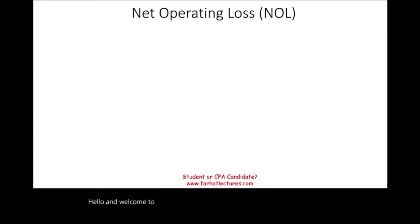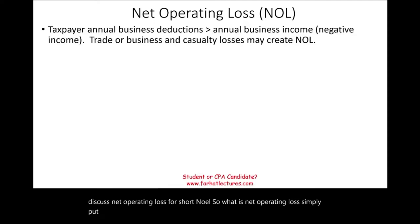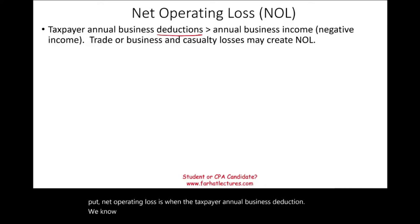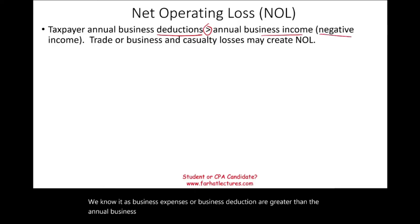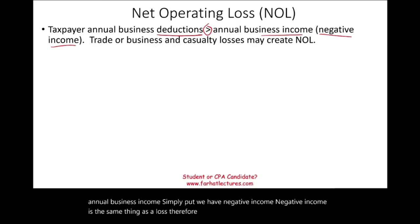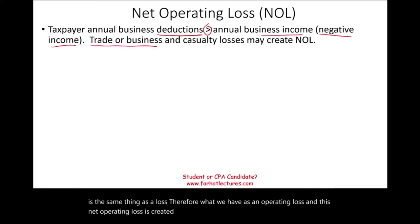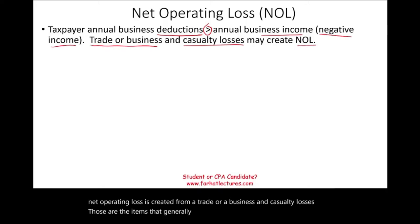Hello and welcome to this session. This is Professor Farhat, in which we will discuss net operating loss, or NOL for short. So what is net operating loss? Simply put, net operating loss is when the taxpayer's annual business deductions — business expenses — are greater than the annual business income. Simply put, we have negative income. Negative income is the same thing as a loss, and therefore we have a net operating loss. This NOL is created from a trade or a business and from casualty losses.